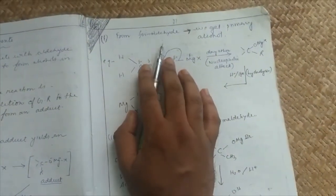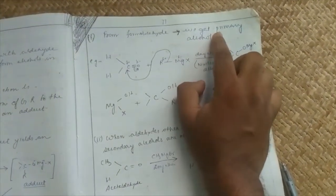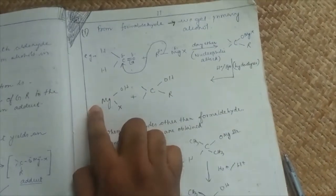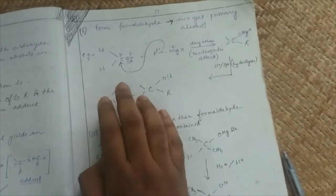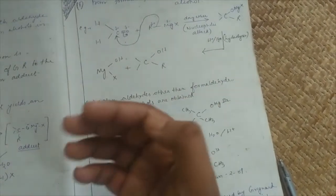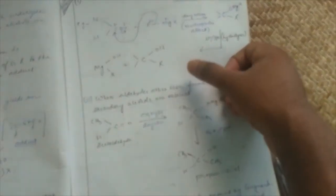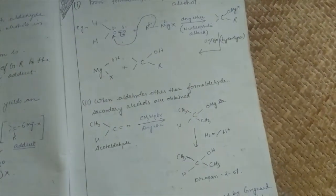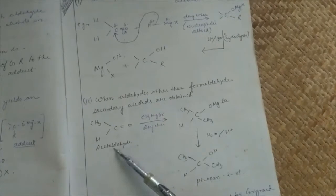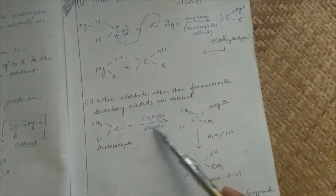From formaldehyde, formaldehyde to primary alcohol. When aldehydes other than formaldehyde, aldehydes other than formaldehyde like ethanol, propanal, butanal, formaldehyde gives primary alcohol, so except formaldehyde, if you have aldehydes what is secondary alcohol? Formaldehyde gives primary alcohol. So acetaldehyde gives secondary alcohol.